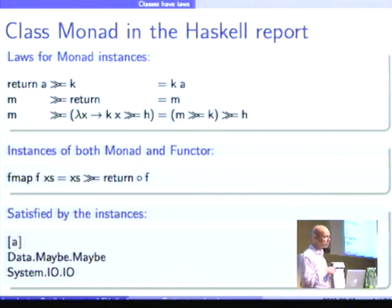And instances of both Monad and Functor should satisfy an extra law, which is also specified in the report. And then, again, it's satisfied by this array, Maybe, and IO. Again, proofs are not given here.